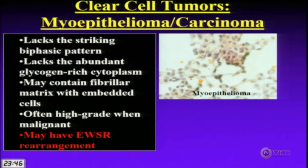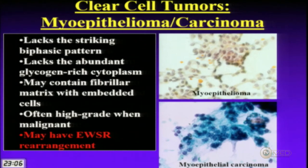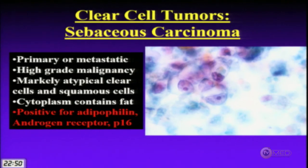For myoepithelioma, it lacks the biphasic pattern of epitheliomyoepithelial carcinoma, and the clear cytoplasm is due to glycogen — confirmed with PAS plus diastase stain. For myoepithelial carcinoma, these are often high-grade tumors with significant atypia, lacking the biphasic pattern. If you see significant atypia, diagnose as high-grade carcinoma in the malignant category. Myoepithelial tumors may also show EWSR1 rearrangement but with a different fusion partner than clear cell carcinoma.